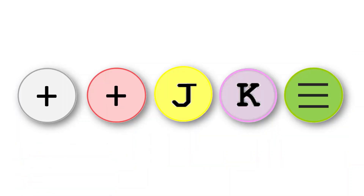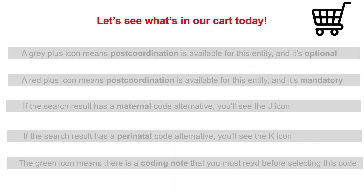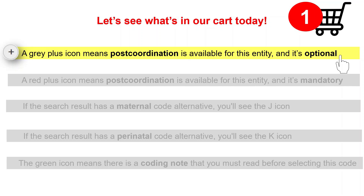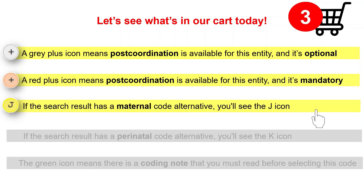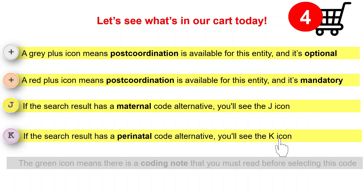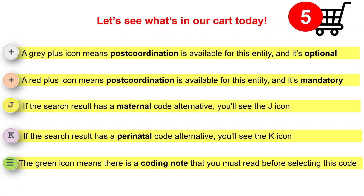We have now discussed all five icons. A gray plus means optional post-coordination is available. A red plus means post-coordination is mandatory. If a search result has a maternal alternative code, you'll see the J icon. If there's a K icon beside an entity, that means there is a perinatal alternative code for this condition. If there's no K icon, that means you can go ahead and select the search result, even for a perinatal case. The green icon means there is a coding note that you must read before selecting this code.